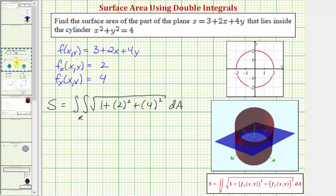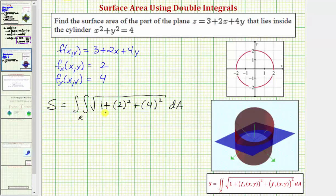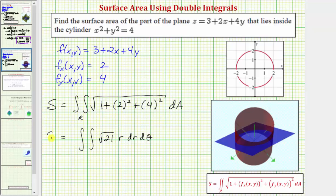For a quick review, when converting a double integral from rectangular form to polar form, we write the function f of x, y as a function of r and theta using our formulas. This won't apply here because the integrand is actually a constant, but dA equals r dr dθ. Notice how the integrand is just the square root of the quantity one plus four plus sixteen, which equals the square root of 21. In polar form, we have the double integral of square root of 21 times r, dr dθ. The radius r goes from zero to two, and theta goes from zero to two pi — one full rotation.